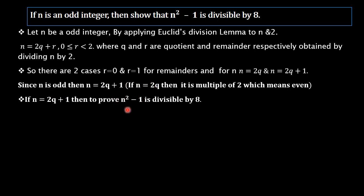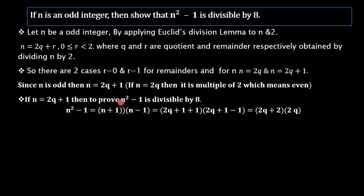Next, we substitute n = 2q + 1 and check whether n²-1 is divisible by 8. We rearrange n²-1 as (n+1)(n-1). Substituting n = 2q + 1, we get n+1 = 2q+2 and n-1 = 2q. So n²-1 becomes (2q+2)(2q).